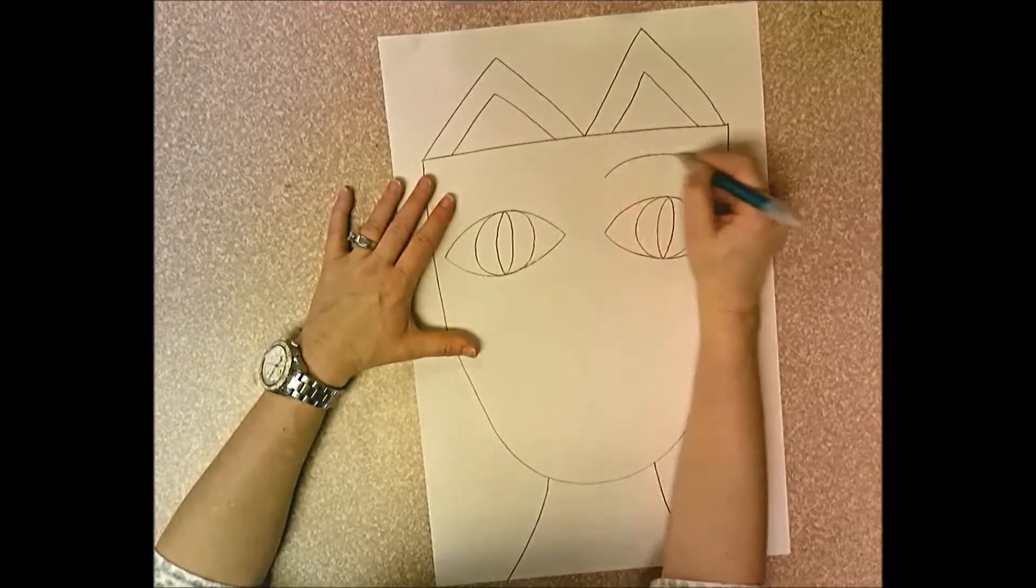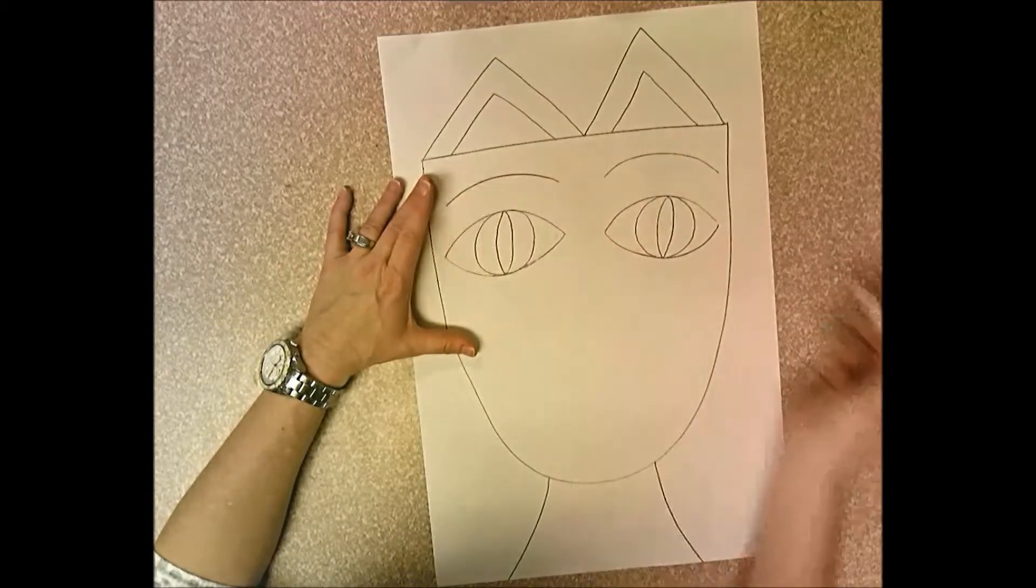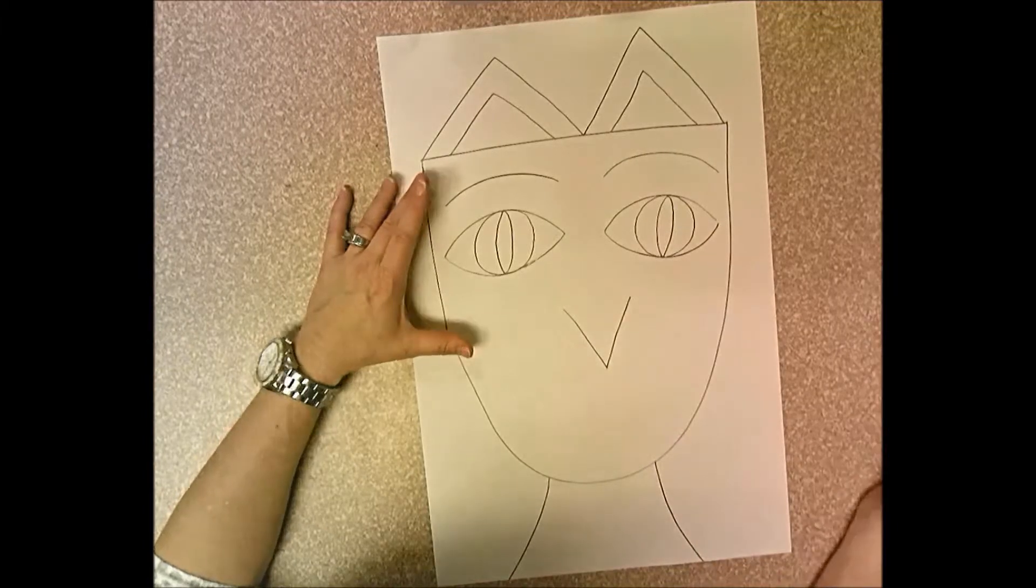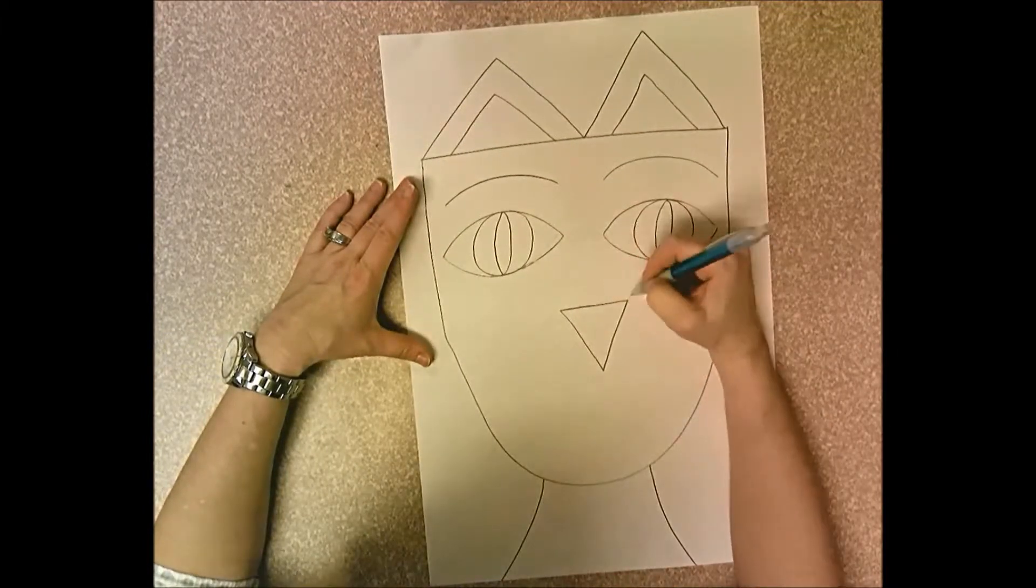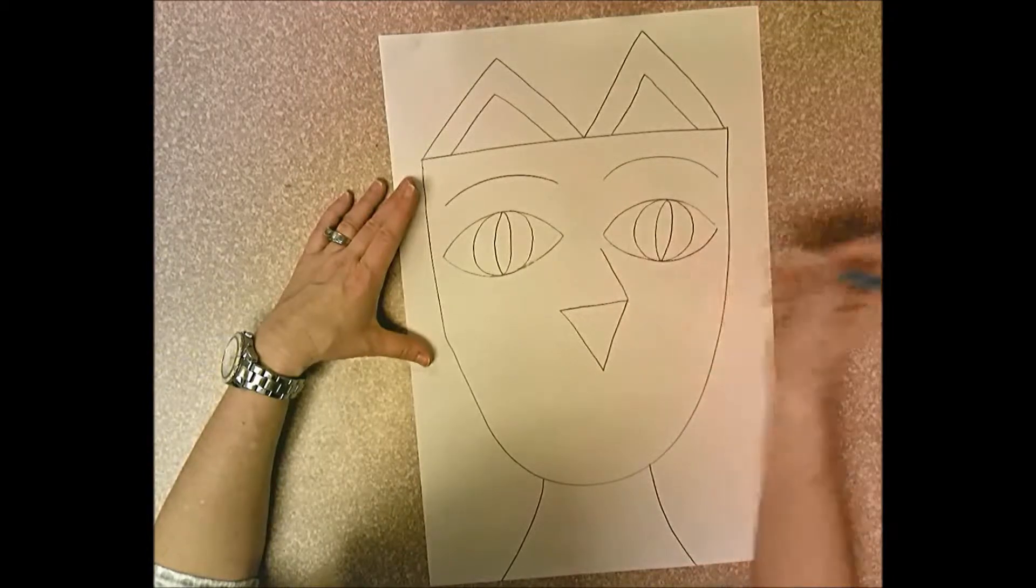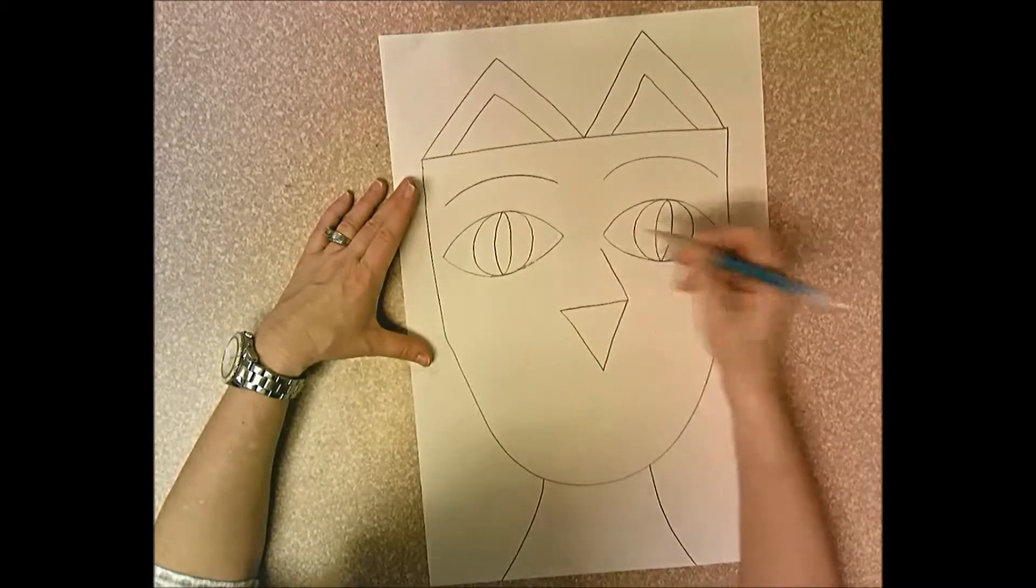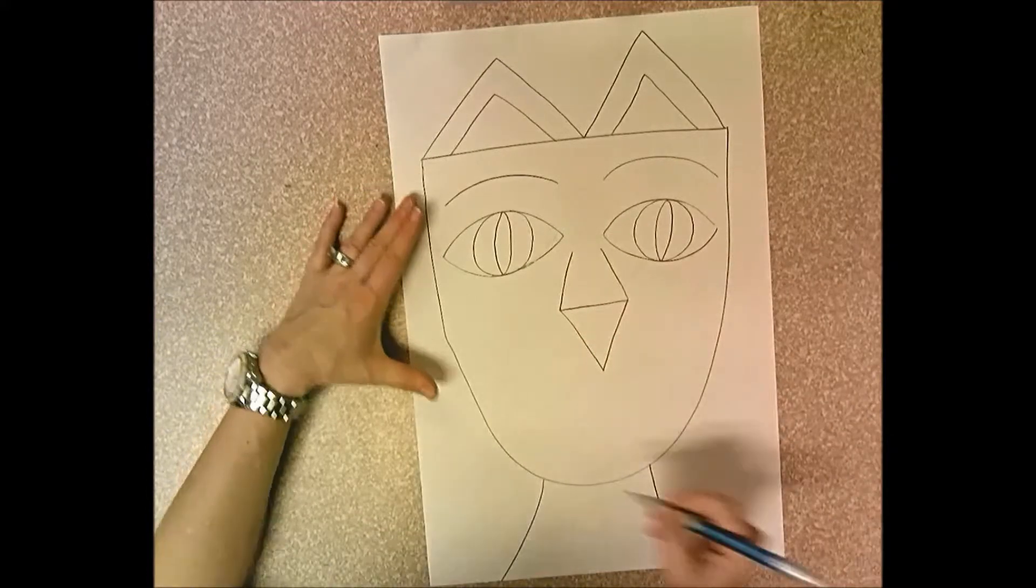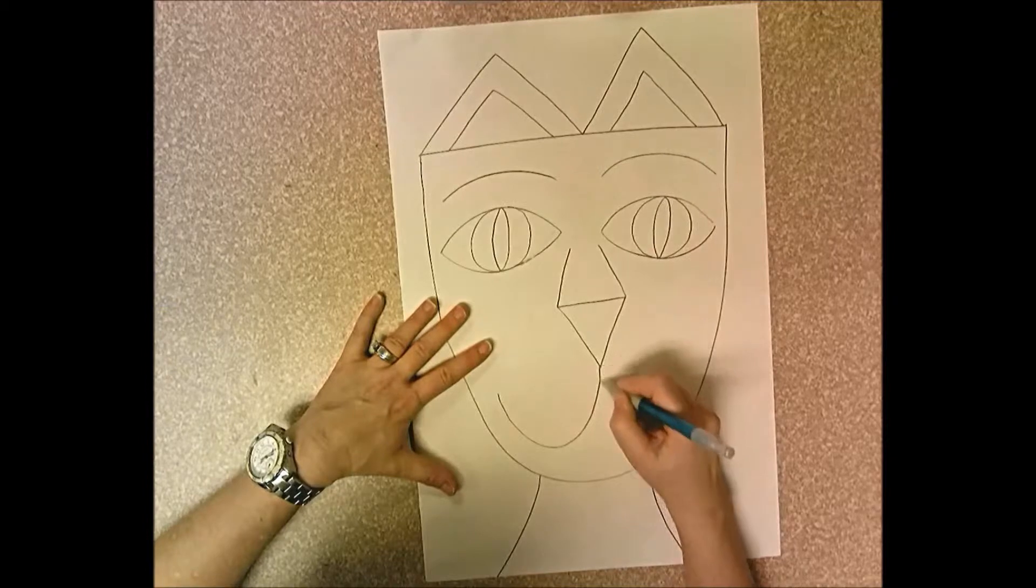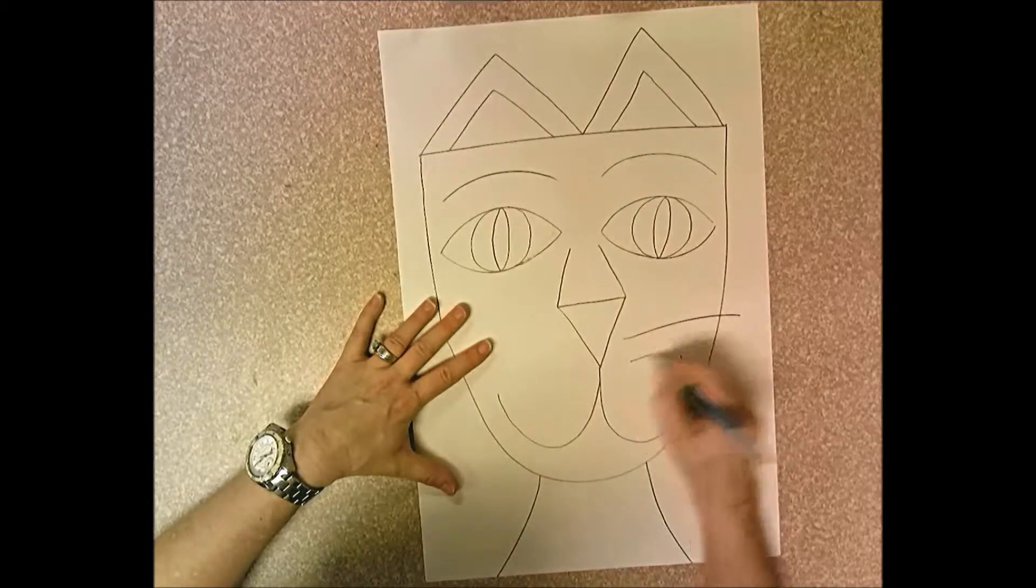You can add some eyebrows if you want, you don't have to. Then you're going to do the nose. You're going to start with the letter V, straight line across the top, and then to do the top of the nose, the bridge of the nose, you're going to draw a diagonal line from the edge of the triangle up towards in between the eyes and do the same on the other side. A big W for the mouth and then some whiskers.